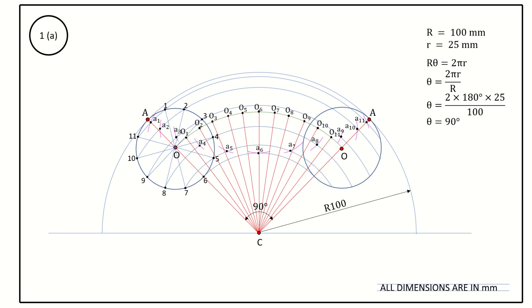Join all these points with a smooth curve — this curve is called the hypocycloid. First join all the points using thin lines, confirm the curve is smooth, then take the HB pencil and draw the curve in dark lines. This arc is the hypocycloid.